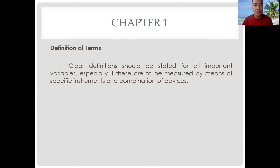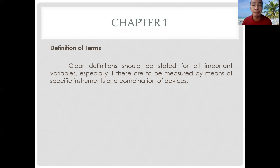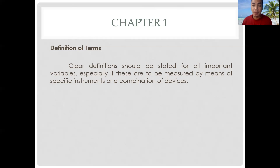Lastly, the definition of terms. Many terms are subject to a variety of interpretations. Such terms should be defined operationally according to the precise meaning they are intended to convey. Clear definitions should be stated for all important variables, especially if they are to be measured by a specific instrument or combination of devices. There are two ways to define words in a research paper: first, by using the conceptual definition — the one found in the dictionary — or by using the operational definition, which is how the term is used in your study. Only those words which are operationally used in the study must be included in the definition of terms, to give clarity and further understanding to your reader.